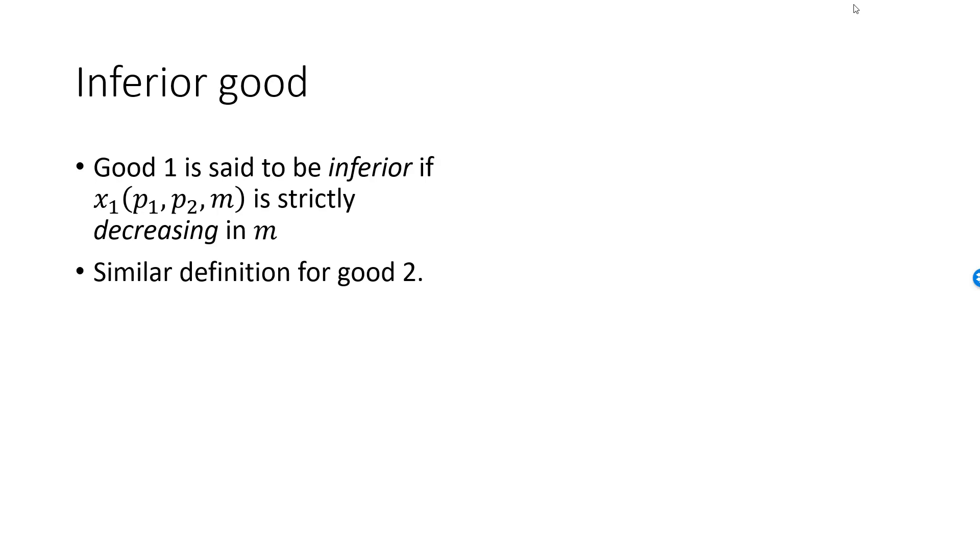If we reduce our consumption of good 2 when income increases, we say that good 2 is inferior. In a two goods model with well-behaved preferences, if one good is inferior, the other one must be normal.